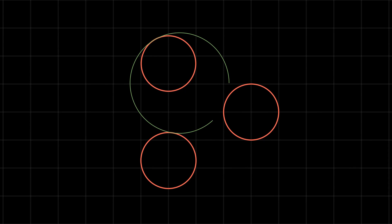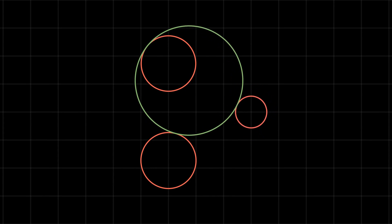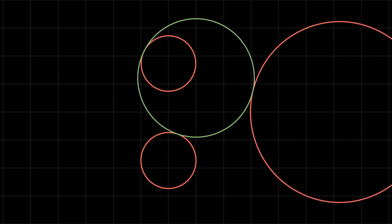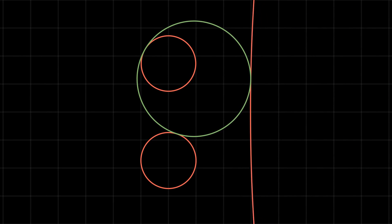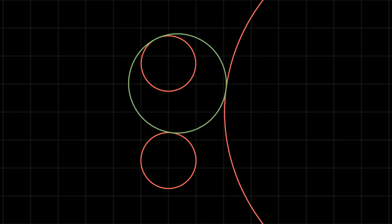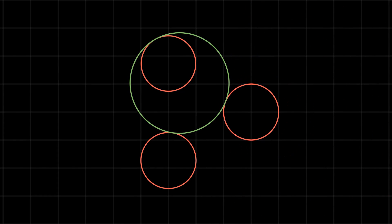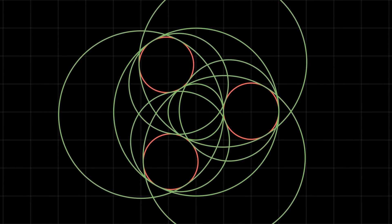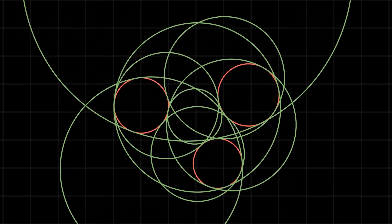In its most general setting, any or all of the circles may have zero radii, thus reducing to a point, or may have an infinite radius, degenerating to a straight line. Depending on the relative spacing between the given circles, the problem may have anything between zero to eight solutions.